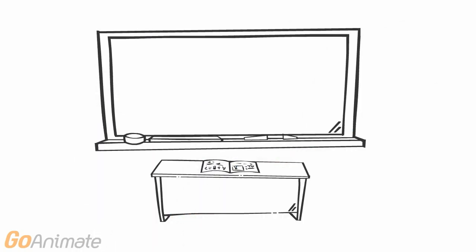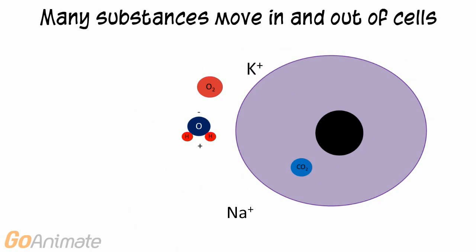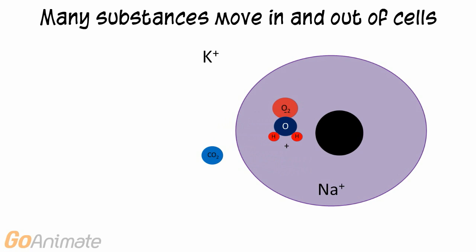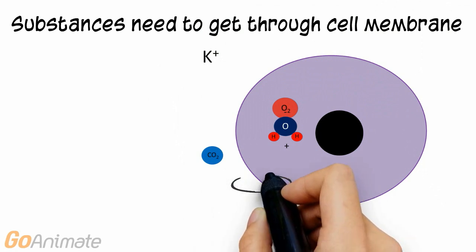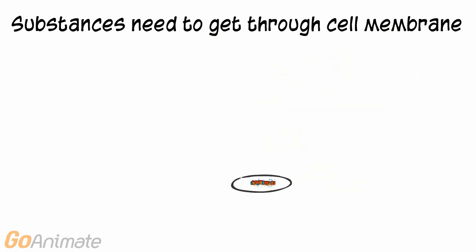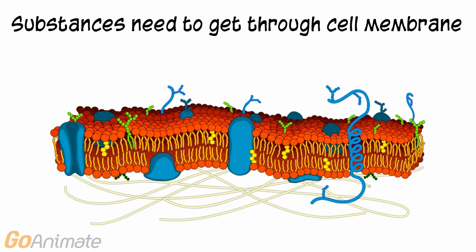Let's learn about cellular transport mechanisms. Many substances move in and out of cells. In order to get substances into or out of the cell, they must get through the cell membrane. Let's take a closer look at the cell membrane.